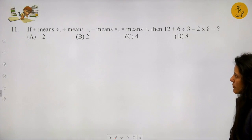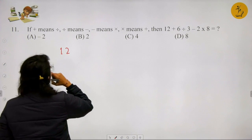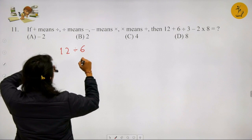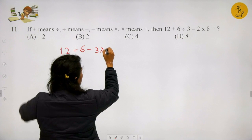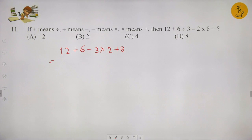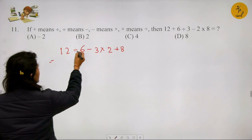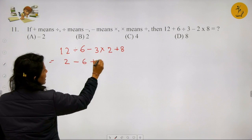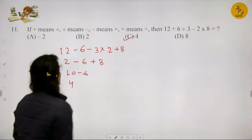Question 11: If plus means divide, division means minus, minus means multiply, and multiply means plus - find the value of 4 + 6 ÷ 3 - 2 × 8. Converting: 4 ÷ 6 - 3 × 2 + 8. Solving: 6.2 = 12 for the division part, giving 12 - 6 + 8. Combining: adding 12 and 8 gives 20, minus 6 gives... actually 6.2s are 12 minus 3.2s are 6 plus 8: 10 minus 6 = 4. Option C is the correct answer.